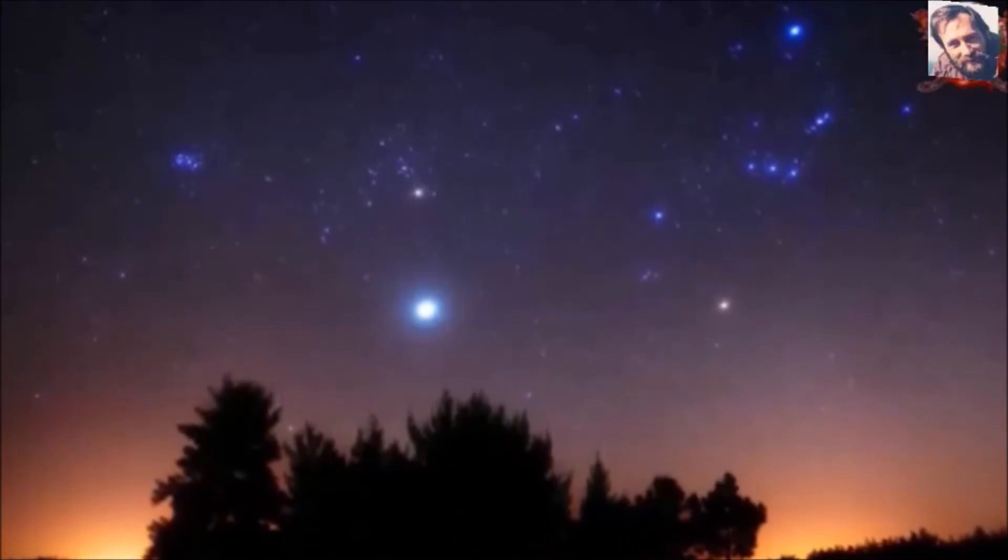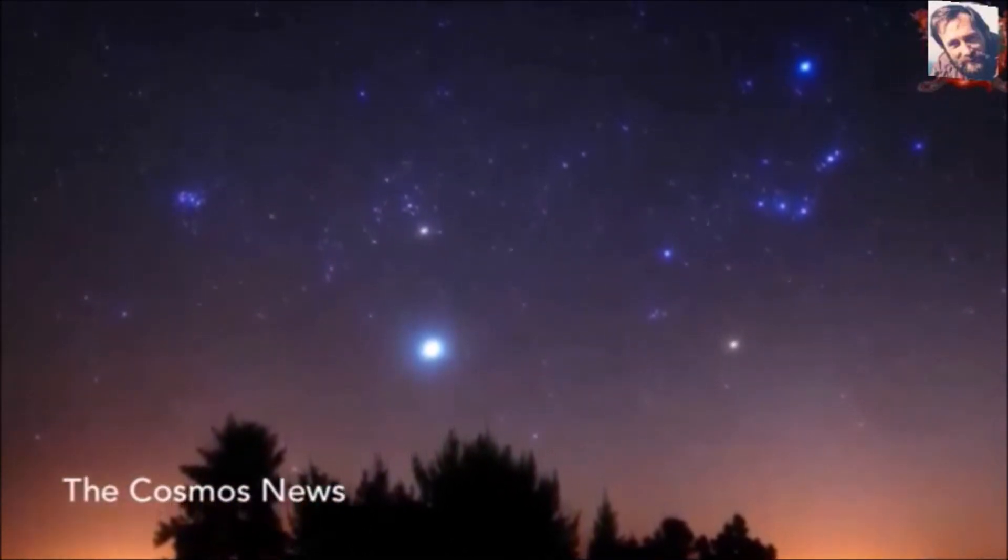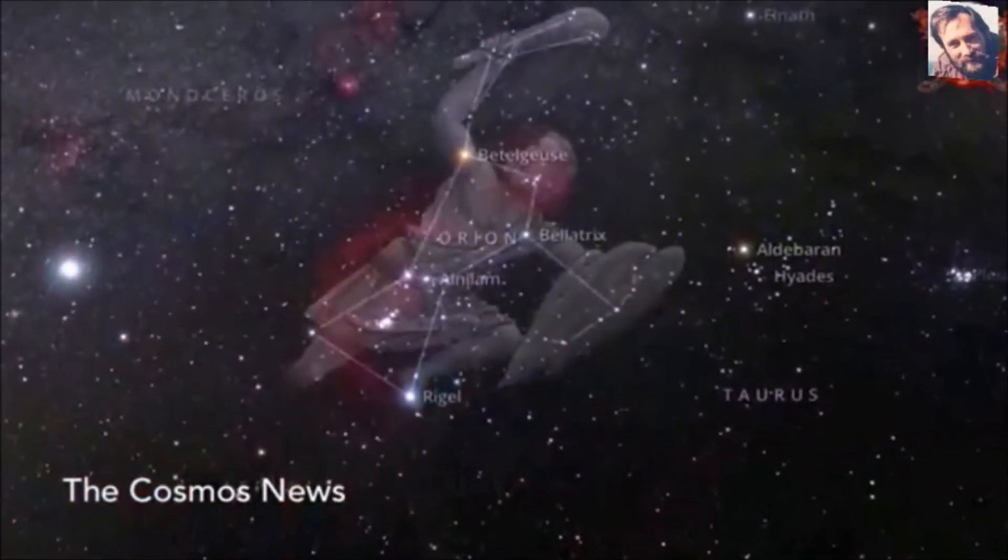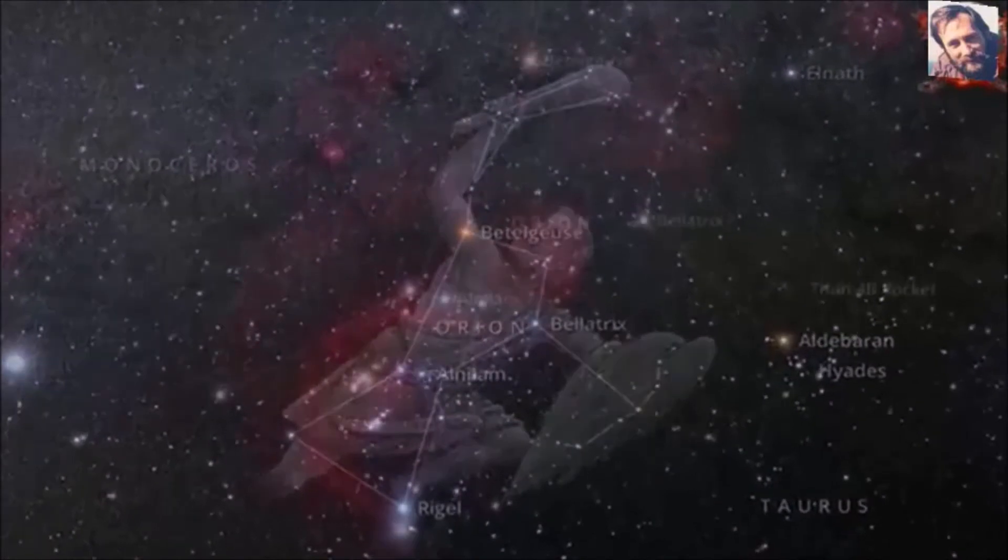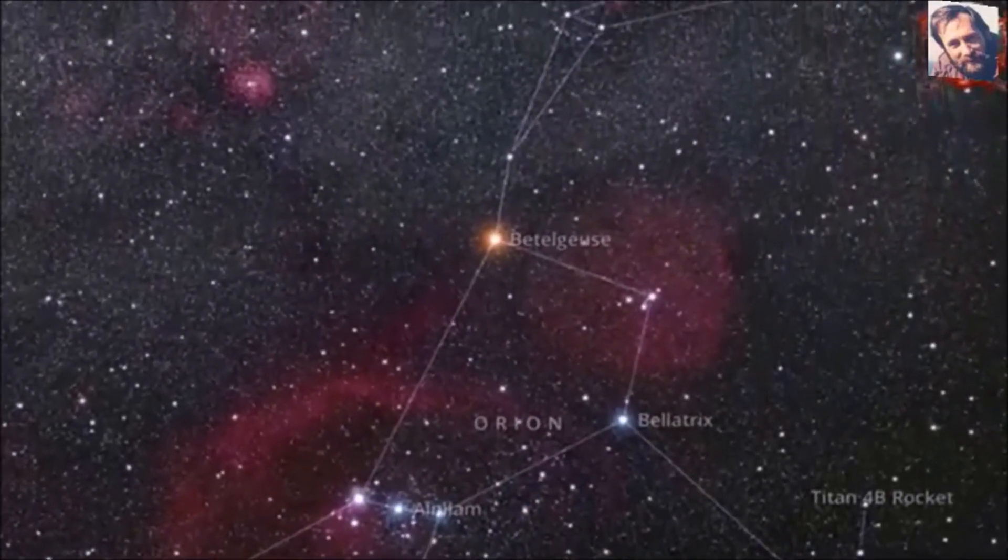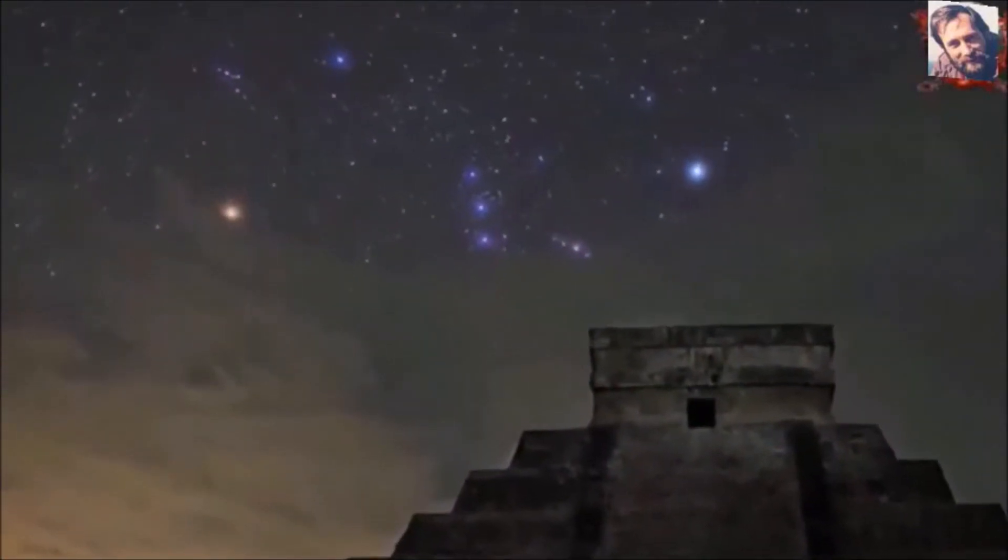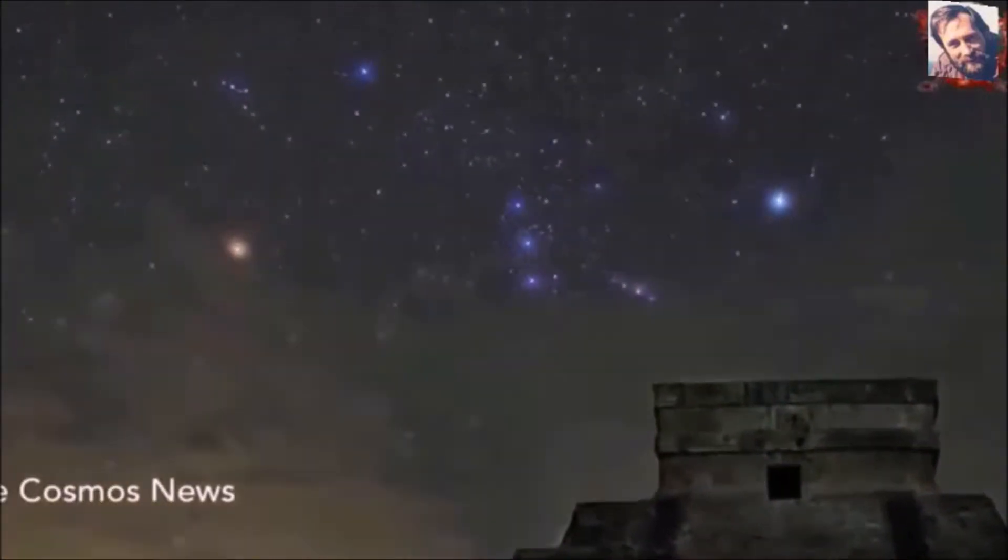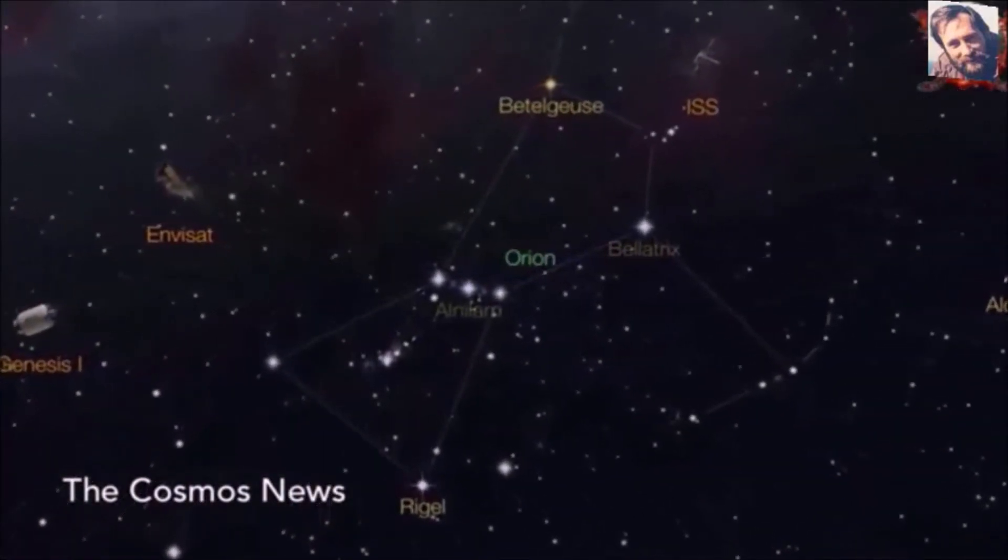At mid-northern latitudes, around the first of every year, Betelgeuse rises around sunset. The star is very well placed for viewing on January and February evenings. By the beginning of March, the star is due south in early evening. By mid-May, it can be glimpsed briefly in the west after sunset. Betelgeuse is traveling behind the sun in early summer, but it returns to the east before dawn by about mid-July.